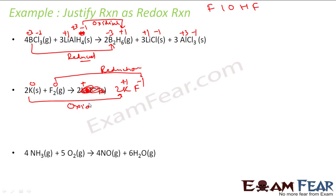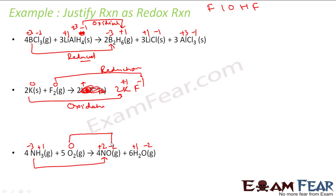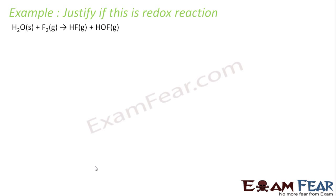Next example: NH₃ + O₂ → products. In NH₃, H is plus one so N is minus three. O₂ is free so O is zero. In the products, O is minus two and H is plus one, so N becomes plus two. Nitrogen goes from minus three to plus two — increase, so oxidation. Oxygen goes from zero to minus two — decrease, so reduction. All these reactions are confirmed as redox reactions.